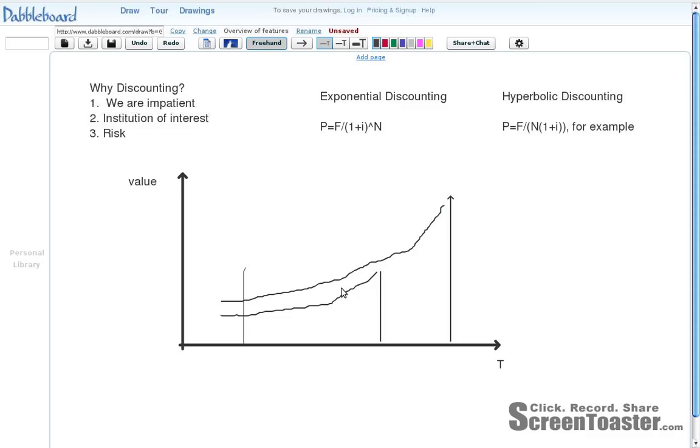Now, exponential discounting gives you this kind of consistent discounting. If you see that something is better at one point in time, and you move forward in time, it still remains better.